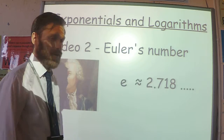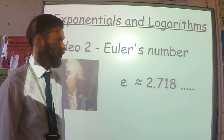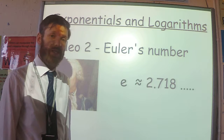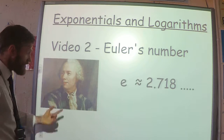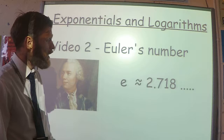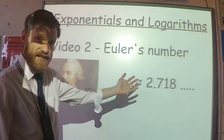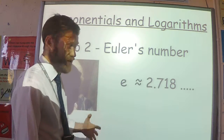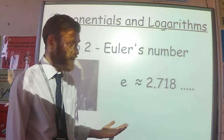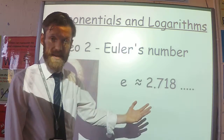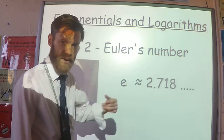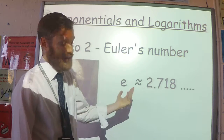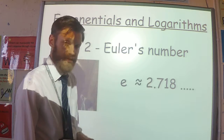This is the second video on exponentials and logarithms, where we're going to introduce Euler's number. Here's the man, Leonard Euler, and this is the number that he discovered. It is an irrational number, so you can't write it as a fraction, just like pi. It's a number that's going to go on forever and ever. To three decimal places, it's 2.718.